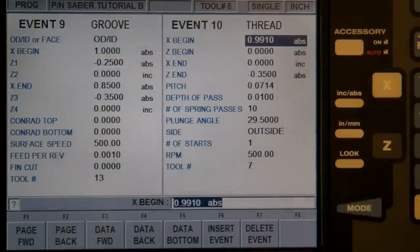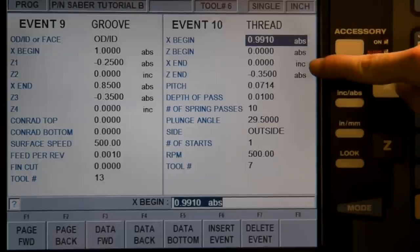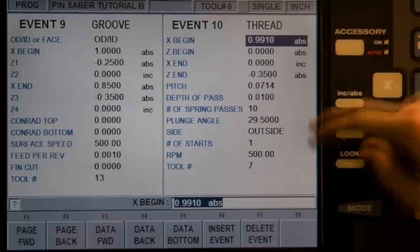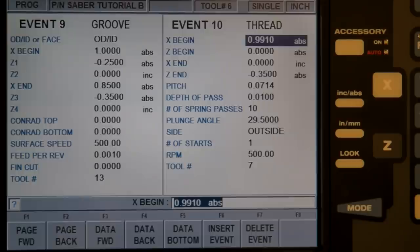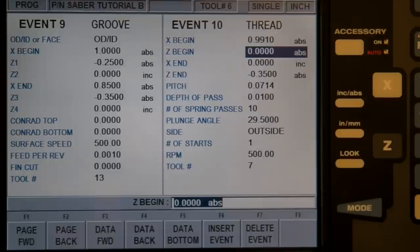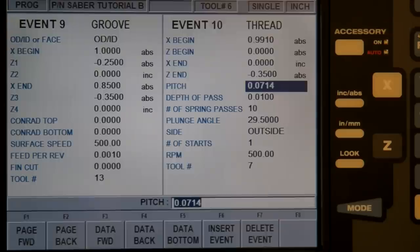Thread events require the following specifications. X begin and end, which is the major diameter of the threads at the start and finish of the cut. For most threads, these will be equal to each other. Z begin and end specifies the Z edges of the threaded region. Pitch is the distance from the crest of one thread to the next, which can be computed as the reciprocal of the number of threads per inch.